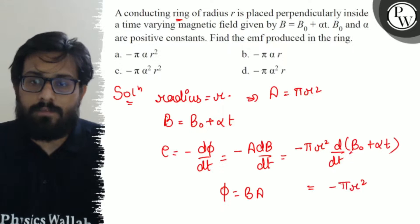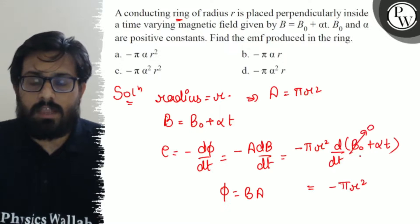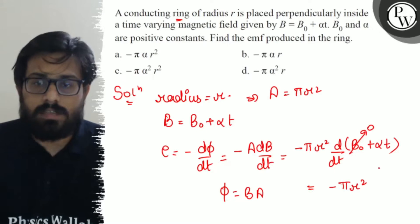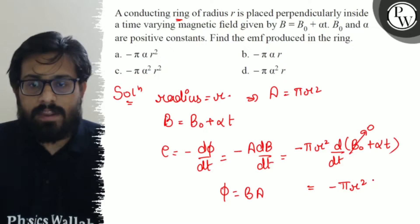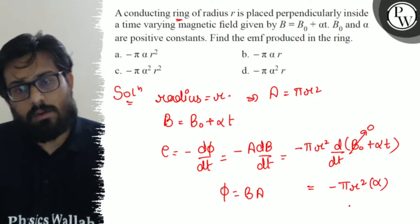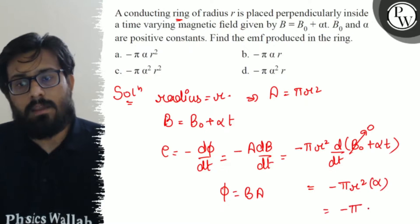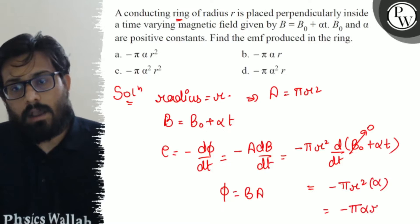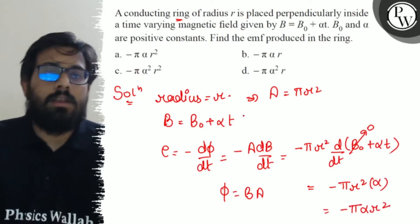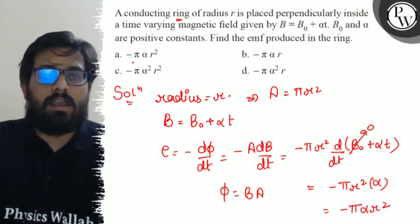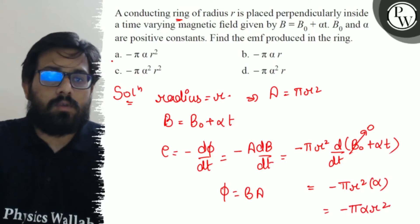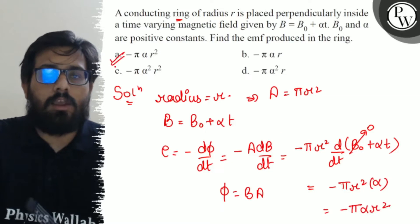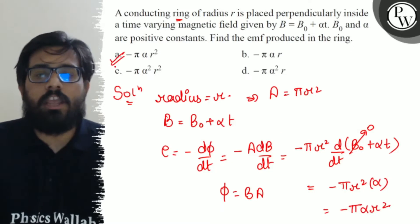The differentiation of B₀ is zero because it's a constant, and differentiation of αt is α. So we get minus π·α·r². That gives us minus π·α·r², which corresponds to option A.